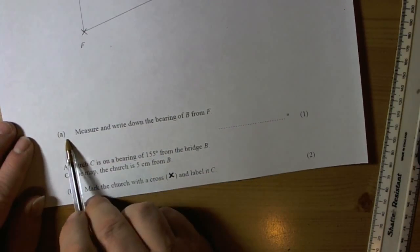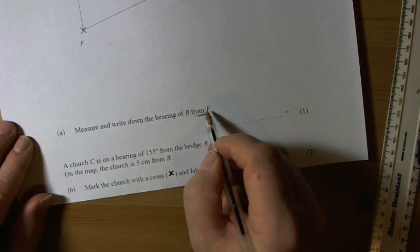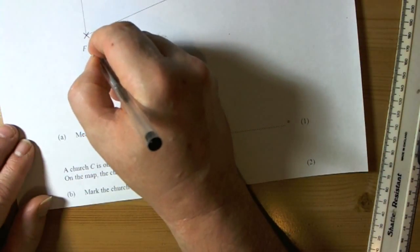And then we'll read the question itself. Measure and write down a bearing of B from F. Now we've got to remember that B from F means we're stood at F. So we're stood here.